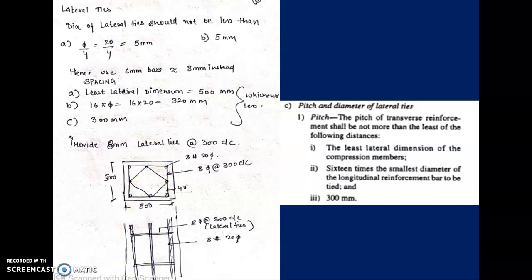Sometimes you are given the load and asked to design, as in this case. Other times the column area and steel percentage are given and you are asked how much load it can carry — in that case you put the same formula and find P. Axially loaded short columns are very easy to design.